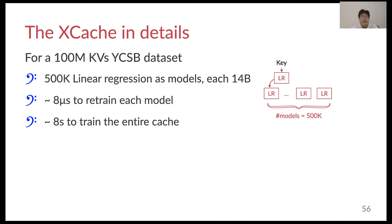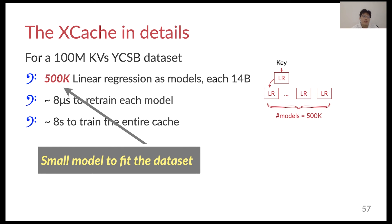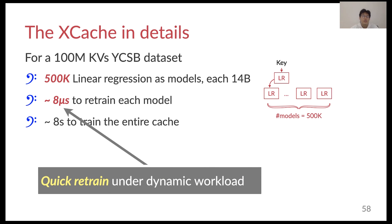Let's look at the cache used in the YCSB workload in more detail. For the 100 million key-value pairs YCSB dataset, we use 500,000 linear regression models to fit it, where each model occupies 14 bytes of memory in a compressed format. For simple datasets like YCSB, XDoor can use very few models to achieve relatively good performance. The linear regression model provides another benefit: it is very fast upon model retraining. For example, when the model is stale, it only takes about 8 microseconds to retrain the sub-model. Finally, we can quickly build the entire cache from scratch — it takes the server about 8 seconds to build the entire cache using a single thread.